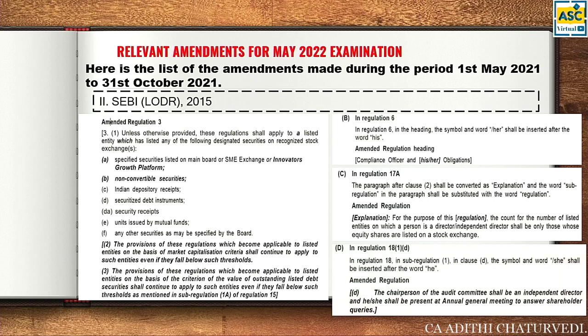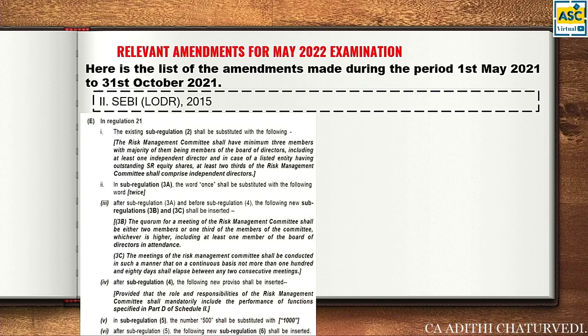In Regulation 18(1)(d), 'he/she' shall be inserted after 'he' — so the Chairperson can be he or she. In Sub-regulation 2 of Regulation 21, an important amendment: the Risk Management Committee shall have a minimum three members with majority being members of the board, including at least one Independent Director. In case of a listed entity having outstanding SR equity shares, at least two-thirds of the Risk Management Committee shall comprise of Independent Directors. Also, the word 'once' shall be substituted with 'twice' regarding meetings.